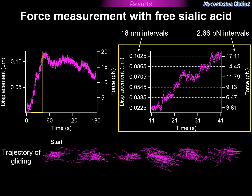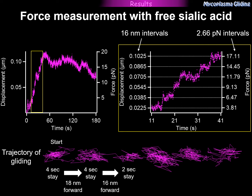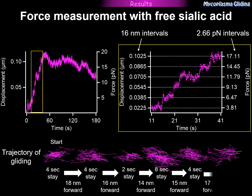I will explain the stepwise movement using the trajectory of gliding. The pneumoniae cell stayed in the same position for 4 seconds, then suddenly moved 18 nm forward. Then it stayed for another 4 seconds, moved 60 nm forward, stayed for 2 seconds, and moved 14 nm forward. The cell repeatedly showed this stay-and-step movement. This stepwise movement generally reflects the minimum unit of motility — in this case, movement by individual legs.